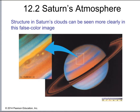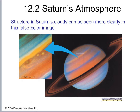Here we have a false color image. The false color image has upped the contrast a little bit so that you can see the band structure. Just like Jupiter, there are different bands — you can't really see them as distinctly in the actual image of Saturn because the colors all blend together, but this enhancement lets you see them.